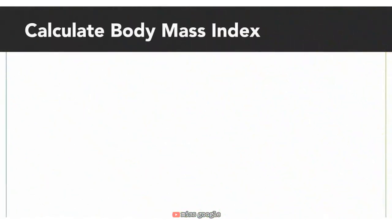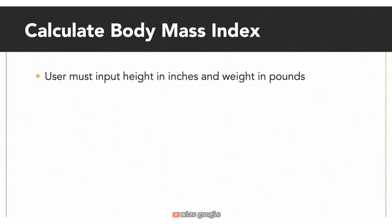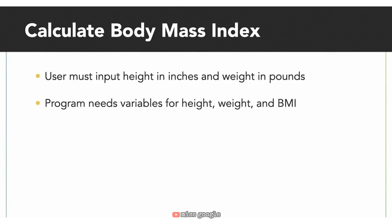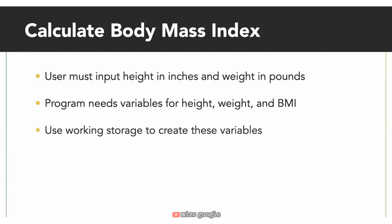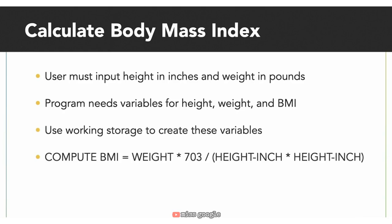Welcome to the BMI challenge. In this program, we're going to create a program that calculates the body mass index of a person. The user must input height in inches and weight in pounds. We'll need variables for height, weight, and BMI stored in working storage. We'll calculate the BMI using the formula: BMI = weight × 703 ÷ height². In COBOL, you use the COMPUTE statement — a verb in COBOL — which calculates the value on the right-hand side of the equals sign and places it into the variable on the left. I've provided a starting program in the exercise files called BMI_start.